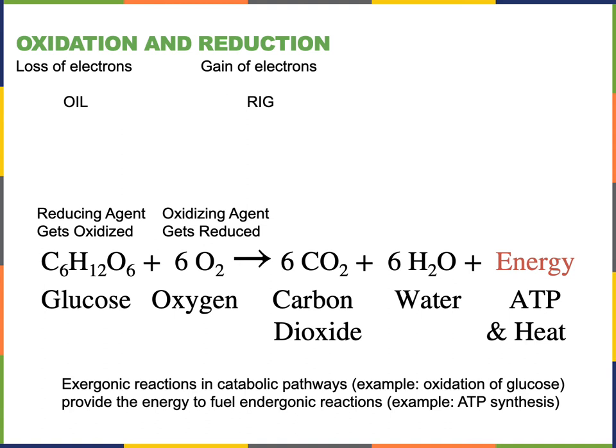This catabolic pathway will release energy from the covalent bonds that are between the atoms in glucose. Some of that energy will be converted to heat, and some of that energy will be converted to the chemical potential energy of ATP molecules.